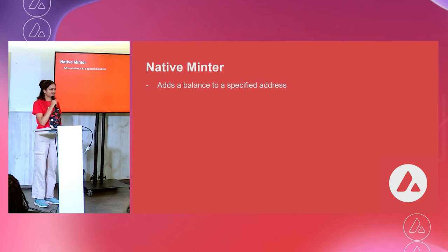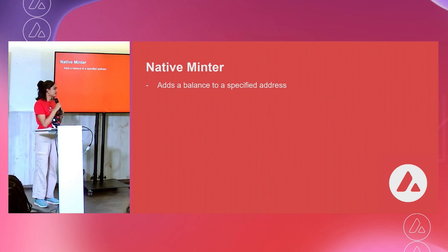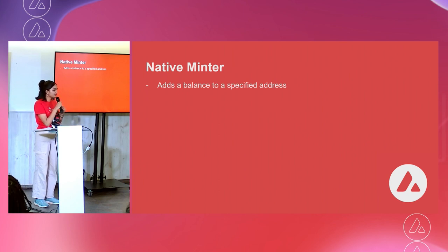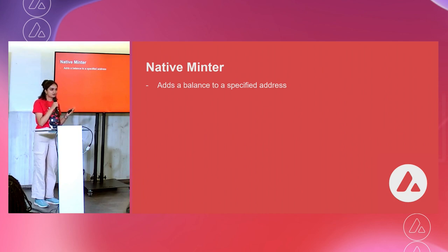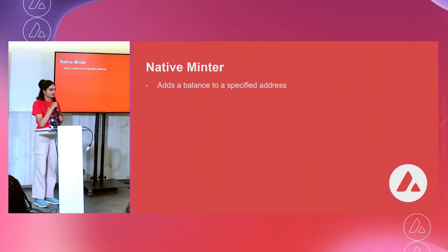Native Minter: you can now add a balance to a specified address of your choice of the native token of that subnet. This is useful for managing your tokenomics. We use it for bridging purposes — if someone wants to move money from the C chain to a subnet, they can burn on the C chain and then mint on the subnet. That's one use case.